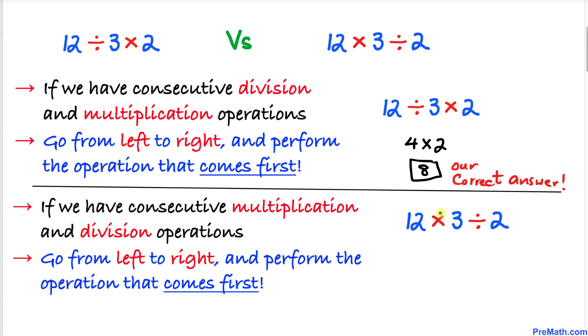And here's our second scenario. This time multiplication is coming first and then division. Once again same rule we're going to go from left to right. So from left to right we can see that the multiplication is coming first. We are going to take care of that thing. So I'm going to multiply 12 times 3 first. That is going to give us 36 and then divided by 2. Our correct answer is going to be 36 divided by 2 is 18.